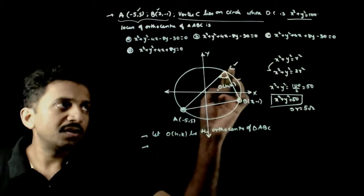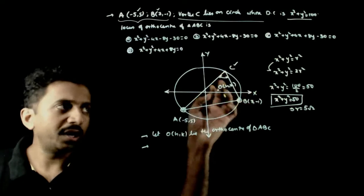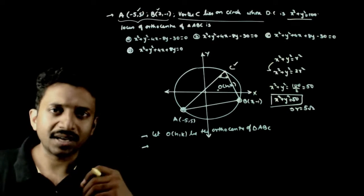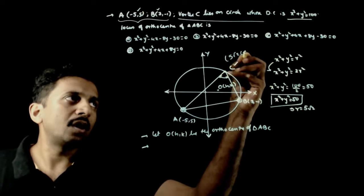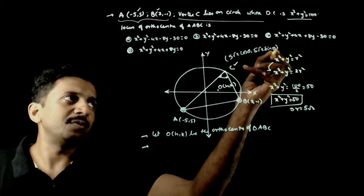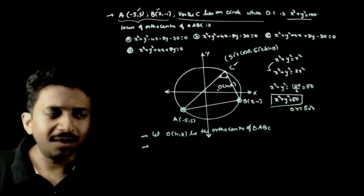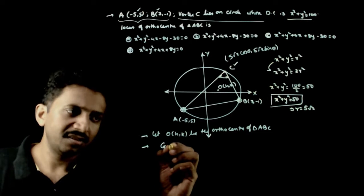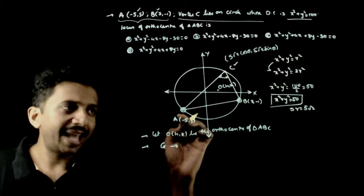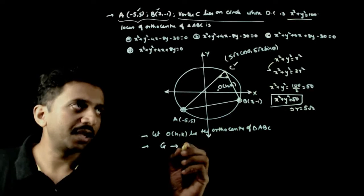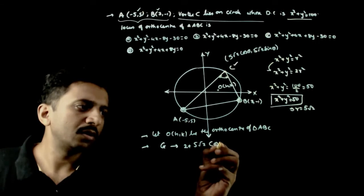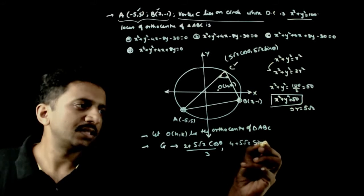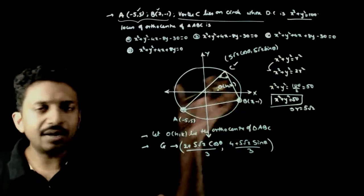Now, let us take C as a parametric point on the circle x square plus y square is equal to 5 root 2 whole square. The parametric point on the circle is r cos theta comma r sin theta. So C is 5 root 2 cos theta comma 5 root 2 sin theta. What is the centroid of triangle ABC? The centroid G is equal to x1 plus x2 plus x3 by 3 comma y1 plus y2 plus y3 by 3. So you get 2 plus 5 root 2 cos theta by 3 and 4 plus 5 root 2 sin theta by 3. This is the centroid of triangle ABC.